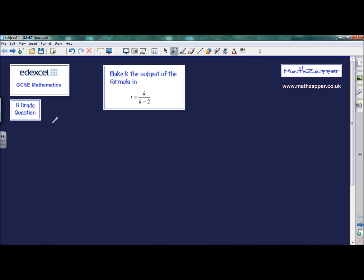EdExcel GCSE Mathematics, an example of a B grade question. We're asked to make k the subject of the formula in t equals k, all divided by k minus 2.